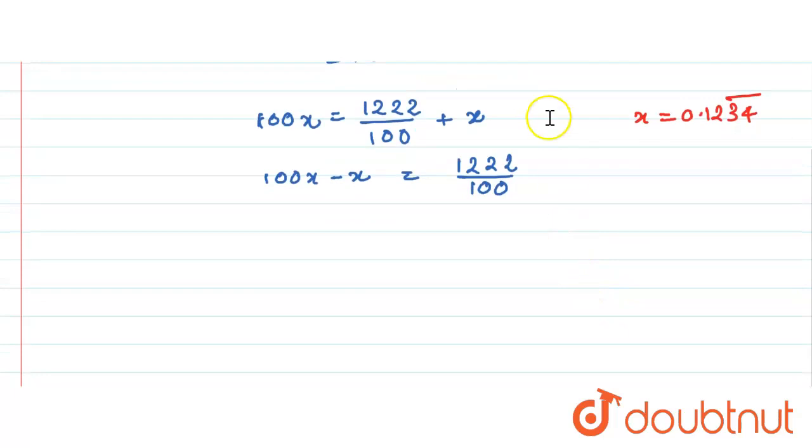Now see here 100x minus x is nothing but 99x. So this is 99x is equal to 1222 divided by 100.